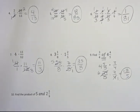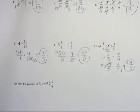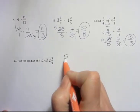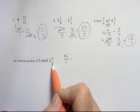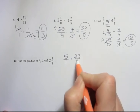And our last example here, we're saying find the product of 5 and 2 and 5/9. A product means multiplication as well. So you would take 5 over 1, because we want to multiply that as a fraction, and 2 times 9 is 18, plus 5 is 23 over 9.